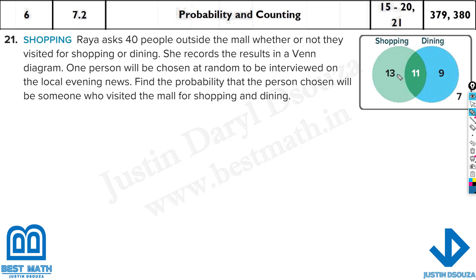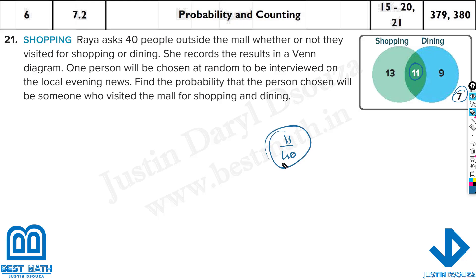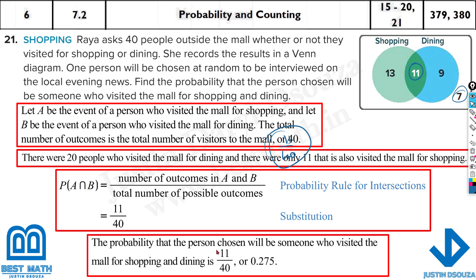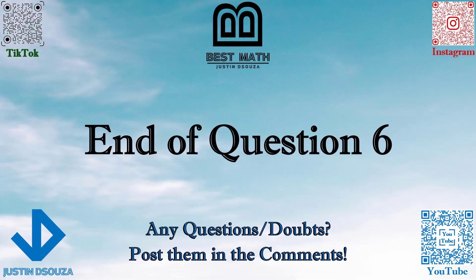The next problem is about shopping. Raya asks 40 people outside the mall whether they visited for shopping or dining. She records the results in a Venn diagram: 13 went only for shopping, 9 only for dining, 11 went for both, and 7 didn't go for either. One person will be chosen at random to be interviewed on the local evening news. Find the probability that the person visited the mall for both shopping and dining. The intersection is 11, so 11 out of 40 gives 27.5%. That is the end of this question.